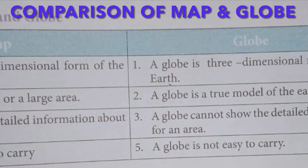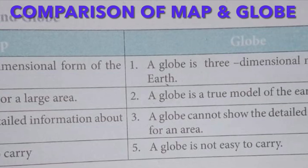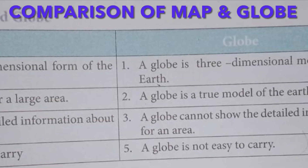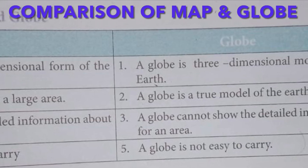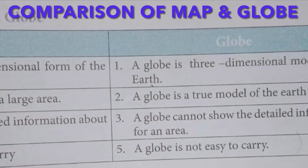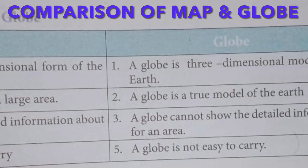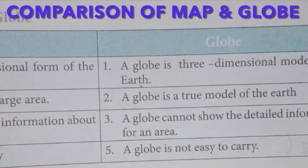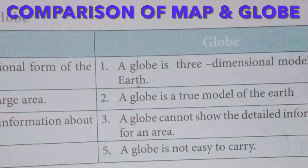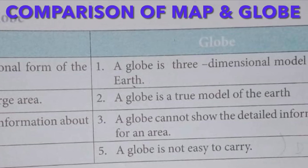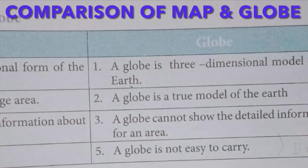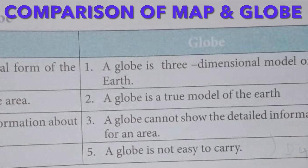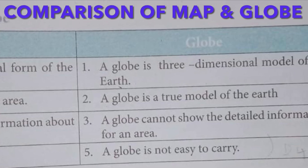Comparison of map and globe: a map is a two-dimensional form of the earth, while a globe is a three-dimensional model. A map can show a small or large area, while a globe is a true model of the earth. A map can show detailed information about an area, but a globe cannot. A map is very easy to carry, but a globe is not.